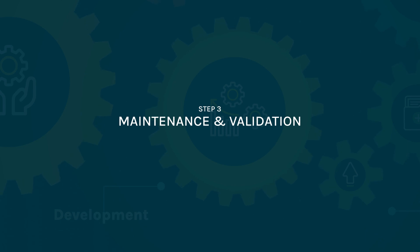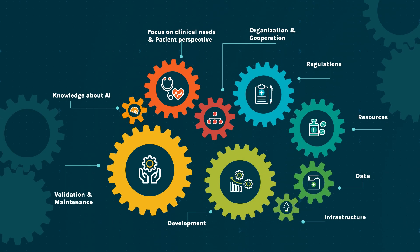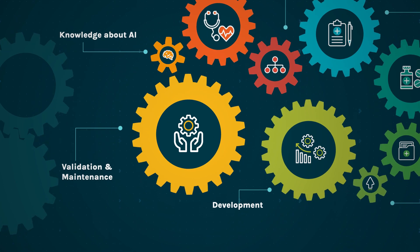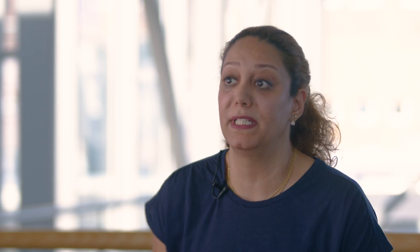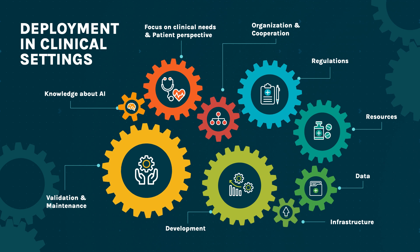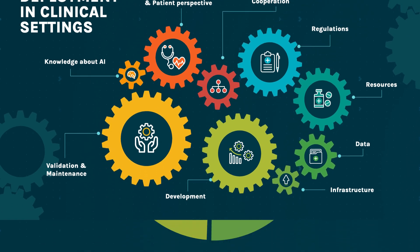The third step is maintenance and validation, which includes all components of the system and should be performed by a group with diverse expertise. The maintenance of the system is an important and continuous monitoring process, both for identifying failures and updating the system accordingly. Even if the AI system is successfully validated, implementation is not finished without the completion of the maintenance phase.